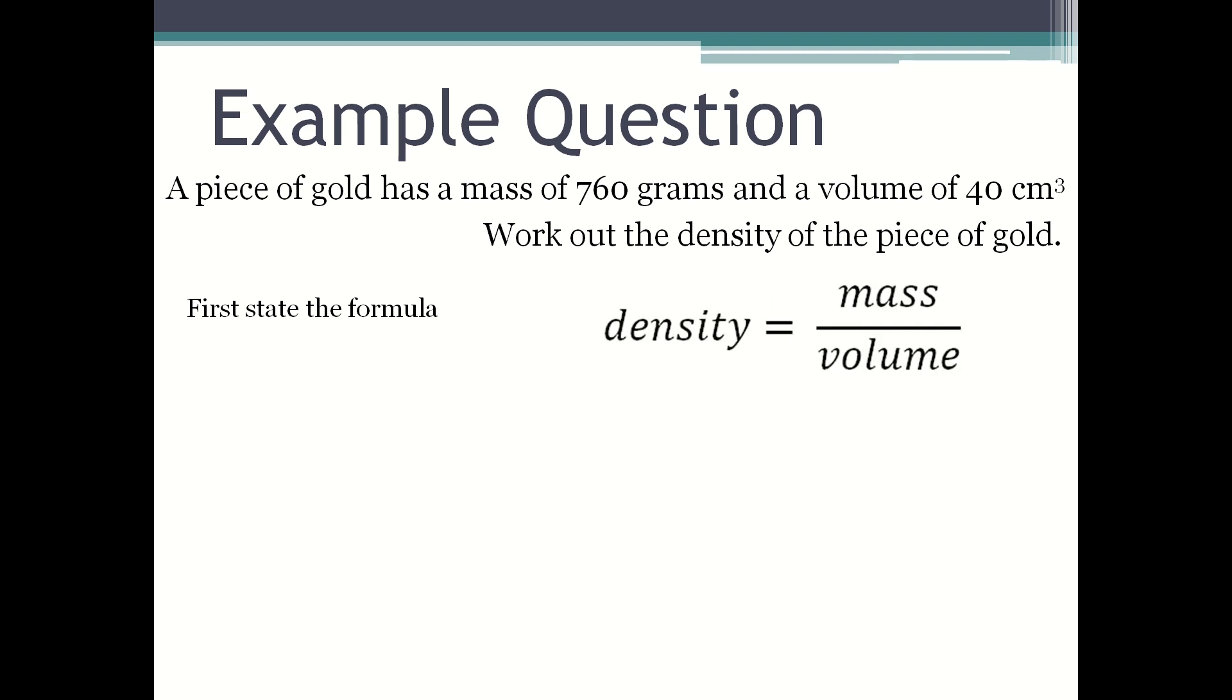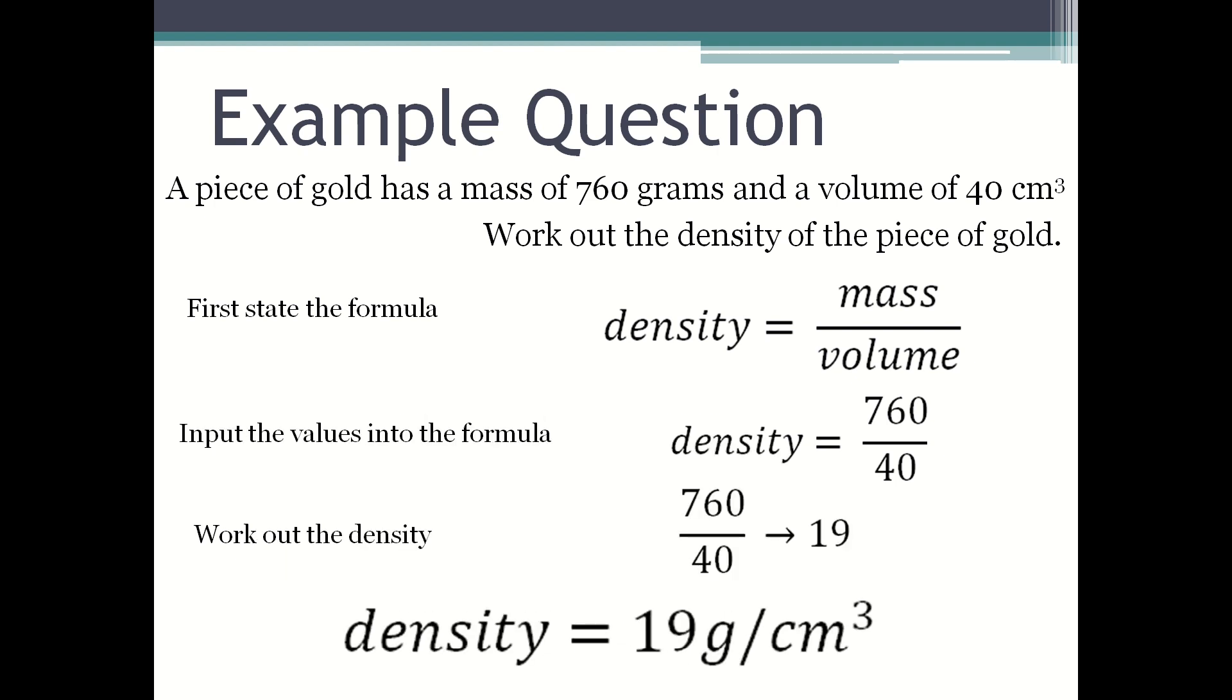Input the values into the formula, so it becomes density equals 760 divided by 40. Work out the density: 760 divided by 40 is 19. Therefore, density equals 19 grams per centimeter cubed.